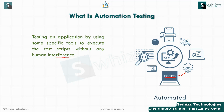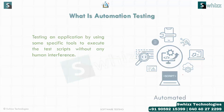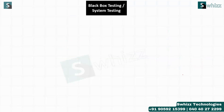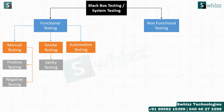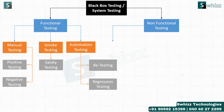That test script will be automated by some tools — this is the simple overview of automation testing. Now, the different types of testing we have include black box testing, functional testing, and non-functional testing, and under automation testing we have retesting and regression testing.